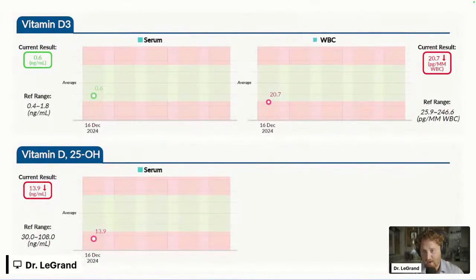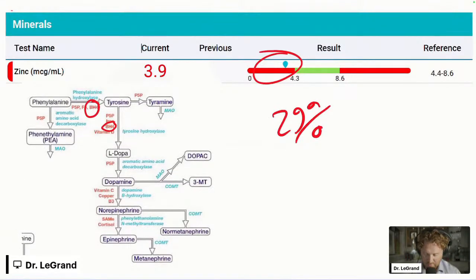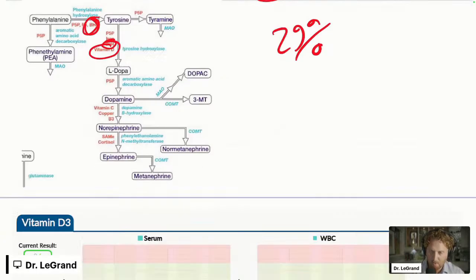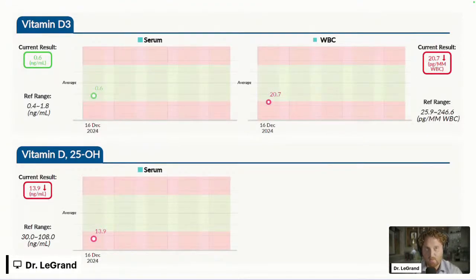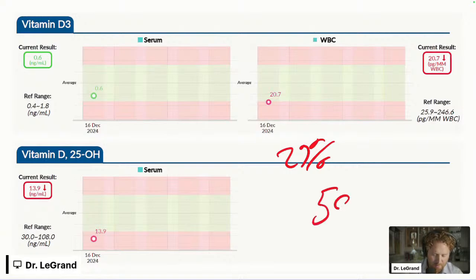Another really big one is vitamin D. Going back here, vitamin D is responsible also for helping, especially the process from tyrosine to L-DOPA. But also, it can impact energy, your immune system, all sorts of things. And when we test this, we found that the people that were chronically low in vitamin D, about 29% of the people were chronically low.